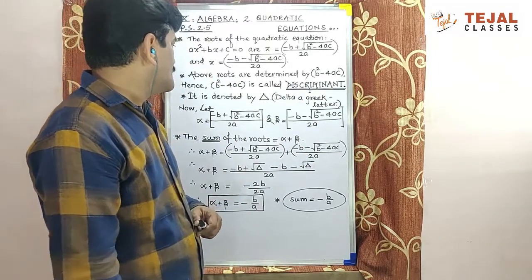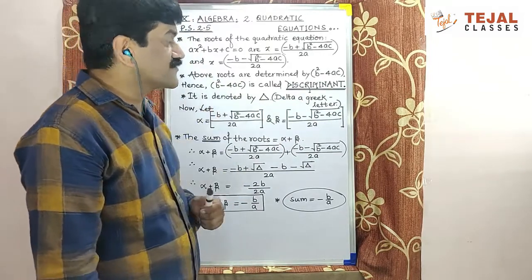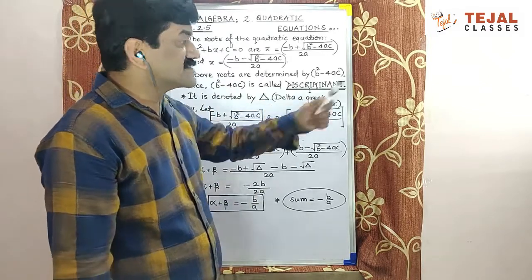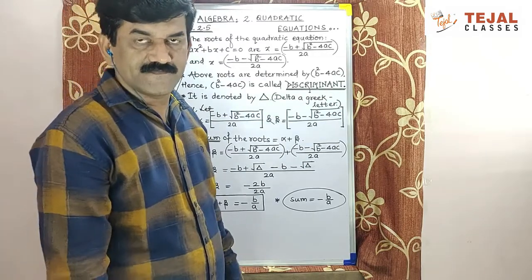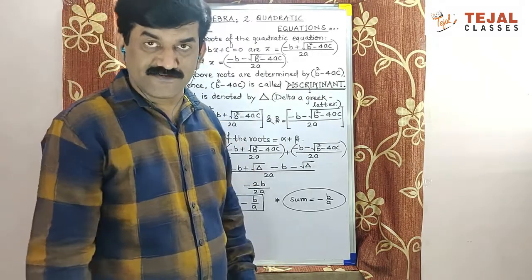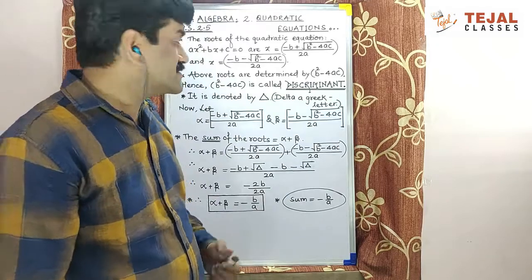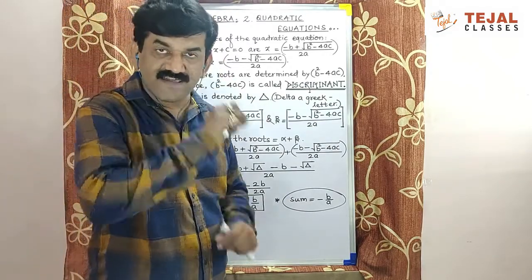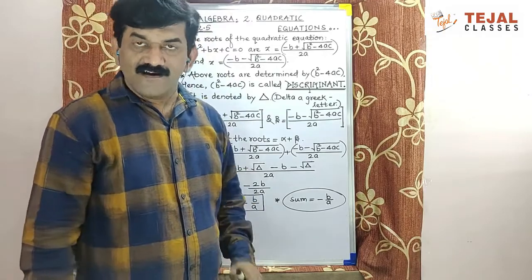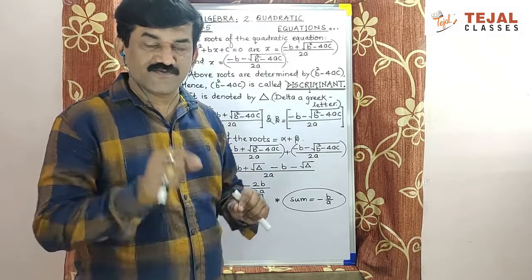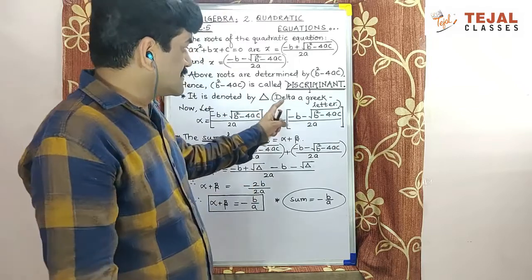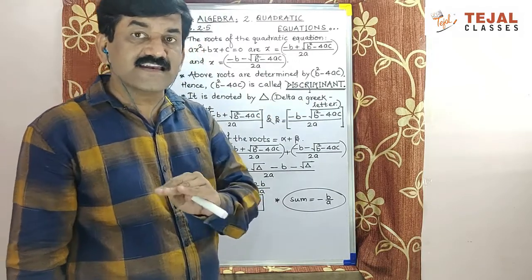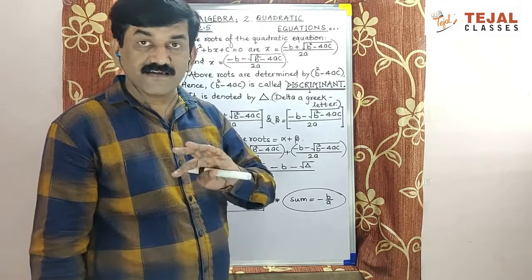So b²-4ac is called discriminant. In this quadratic chapter, this discriminant is denoted by delta. If I show it with a triangle, delta is a Greek letter. Triangle is known as a Greek letter; it's pronounced as delta.